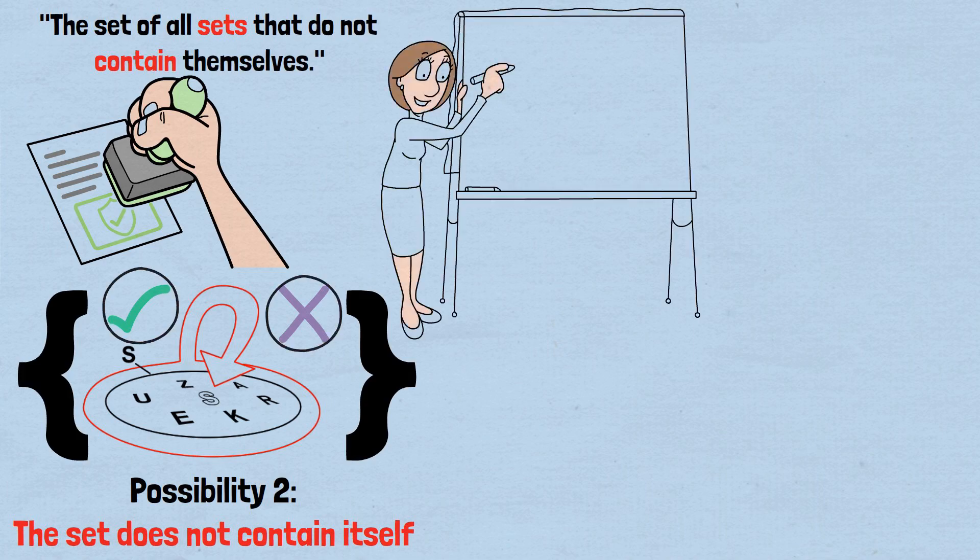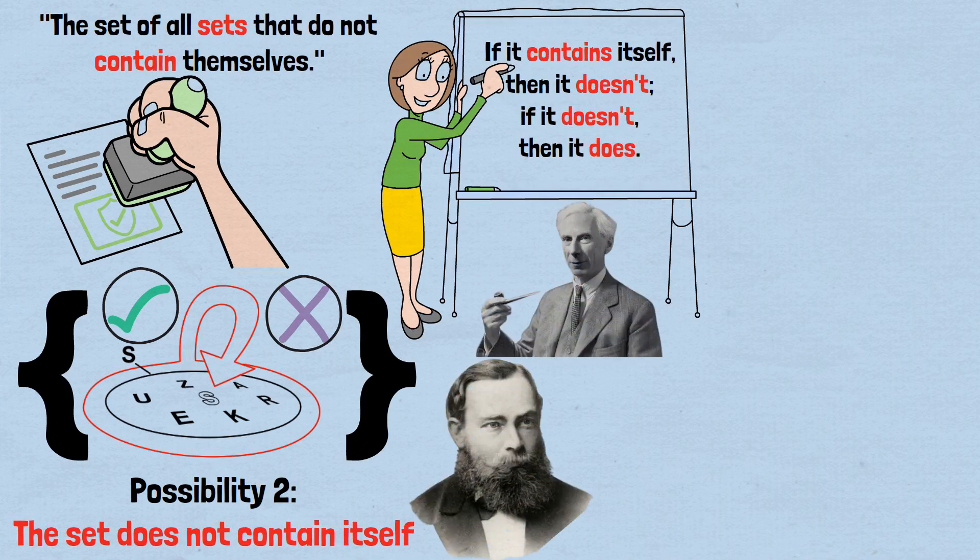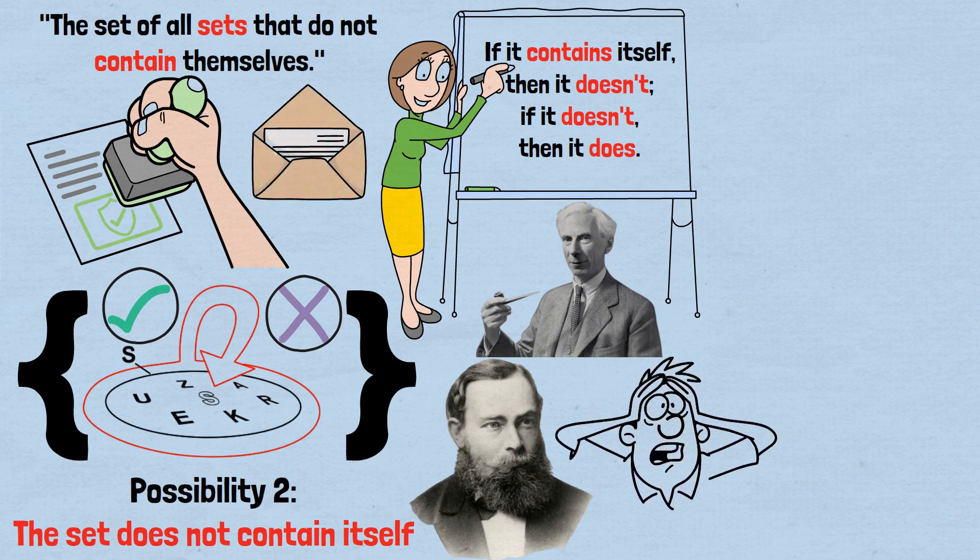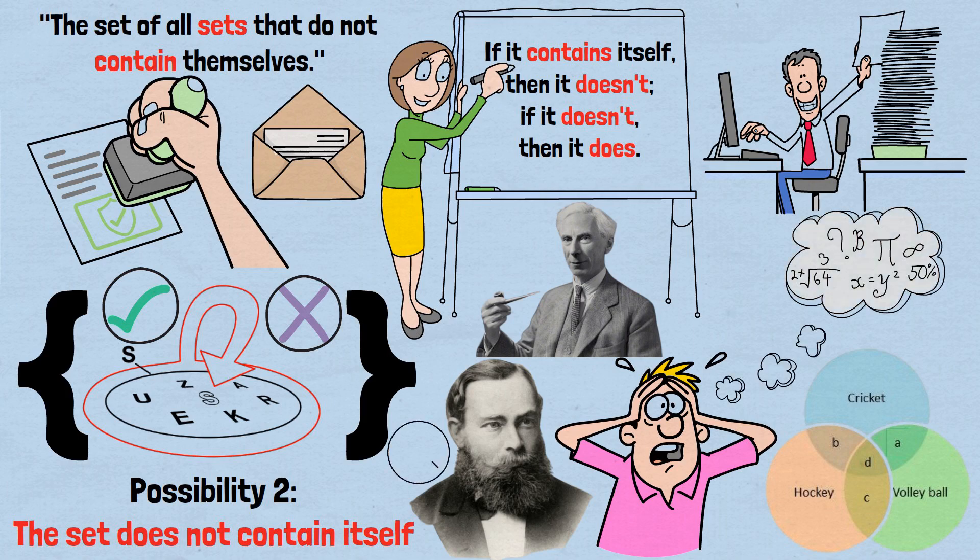Either way, we reach an absurd conclusion. If it contains itself, then it doesn't. If it doesn't, then it does. This is Russell's paradox. And when Frege received Russell's letter explaining it, the paradox devastated him. Frege had just completed the second volume of his life's work, using set theory to derive all of mathematics from pure logic. Russell's paradox revealed a fatal flaw in his system.